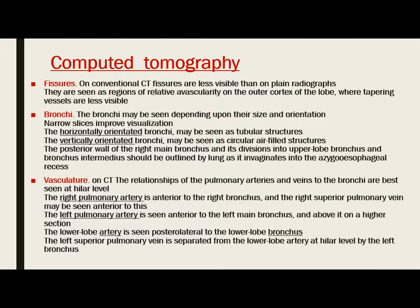On computed tomography, the fissures are less visible than on plain radiographs. They are seen as regions of relative avascularity on the outer cortex of the lobe, where tapering vessels are less visible. The bronchi may be seen depending upon their size and orientation. Narrow slices improve visualization of the bronchi. Horizontally-oriented bronchi, such as the anterior segments of the upper lobes and superior segments of the lower lobes, may be seen as a tubular structure, while vertically-orientated bronchi such as the main bronchi and bronchus intermedius may be seen as a circular air-filled structure. The posterior wall of the right main bronchus and its division into upper lobe and bronchus intermedius should be outlined by lung as it invaginates into the azygoesophageal recess.